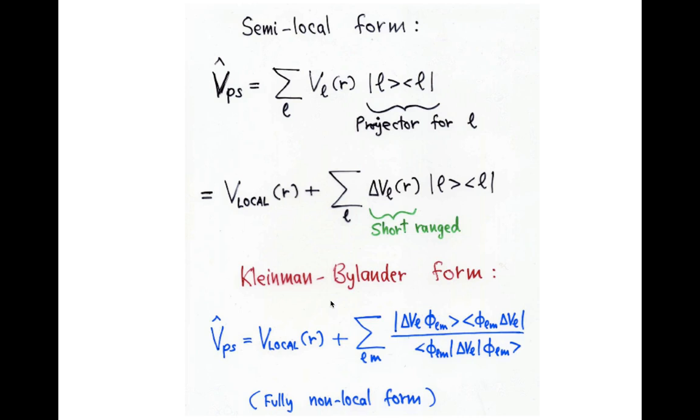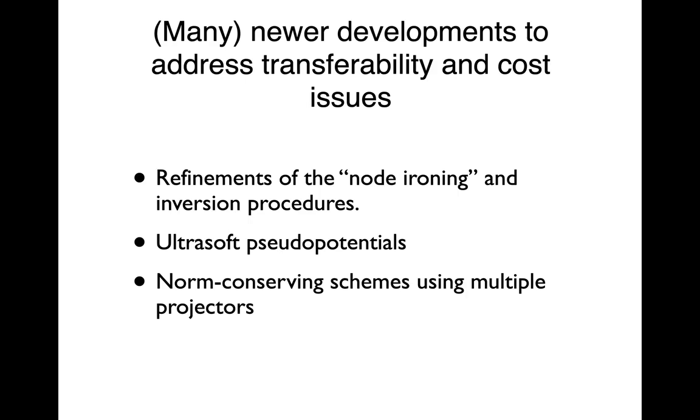the Kleinman-Bylander form, in which you do a transformation to get the fully non-local operator.